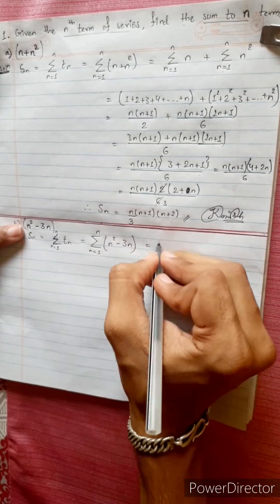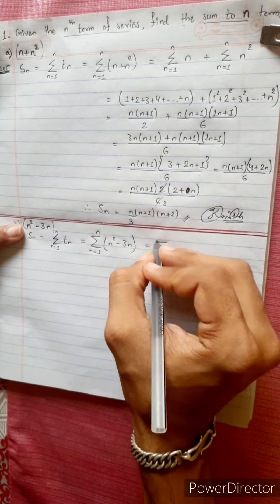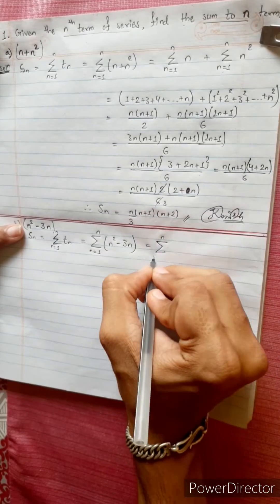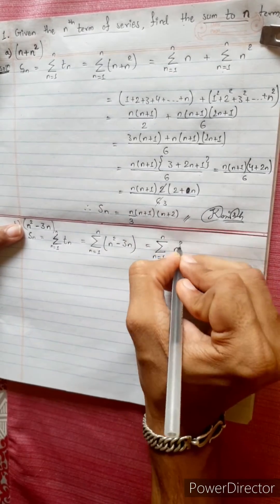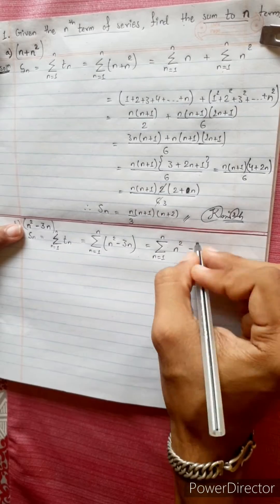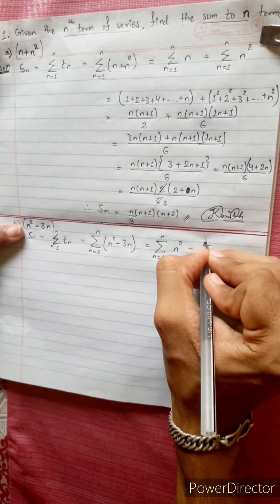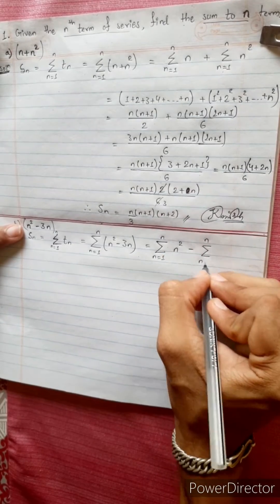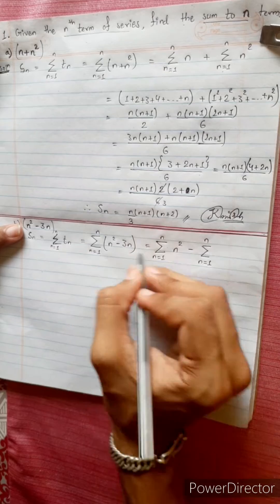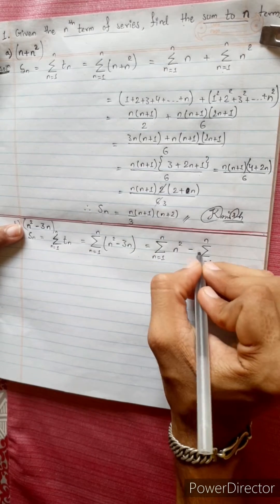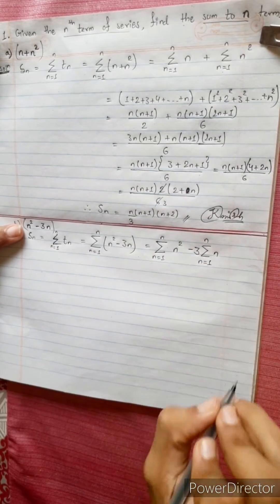So Sₙ equals summation of n² minus summation of 3n, splitting the expression into two separate summations.